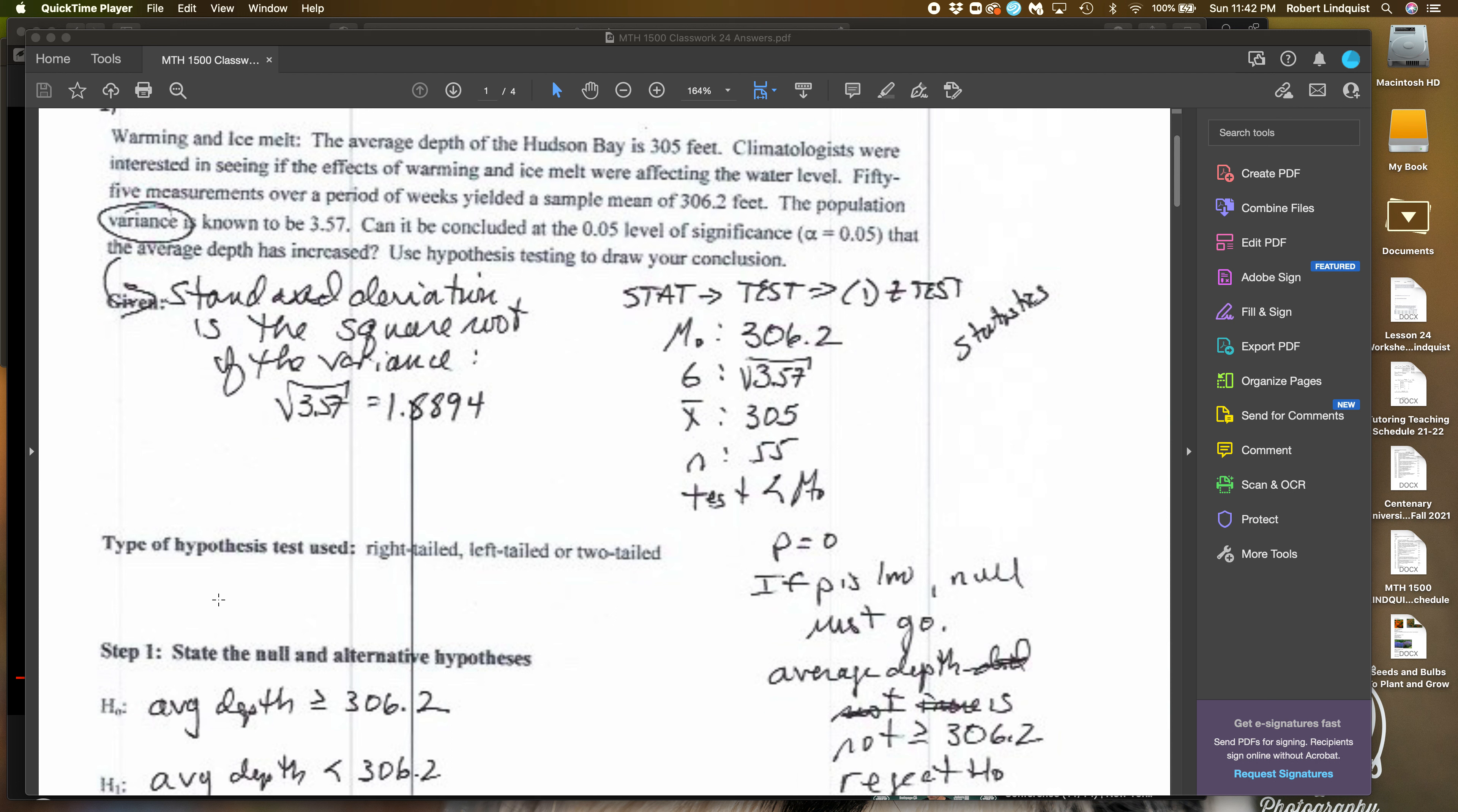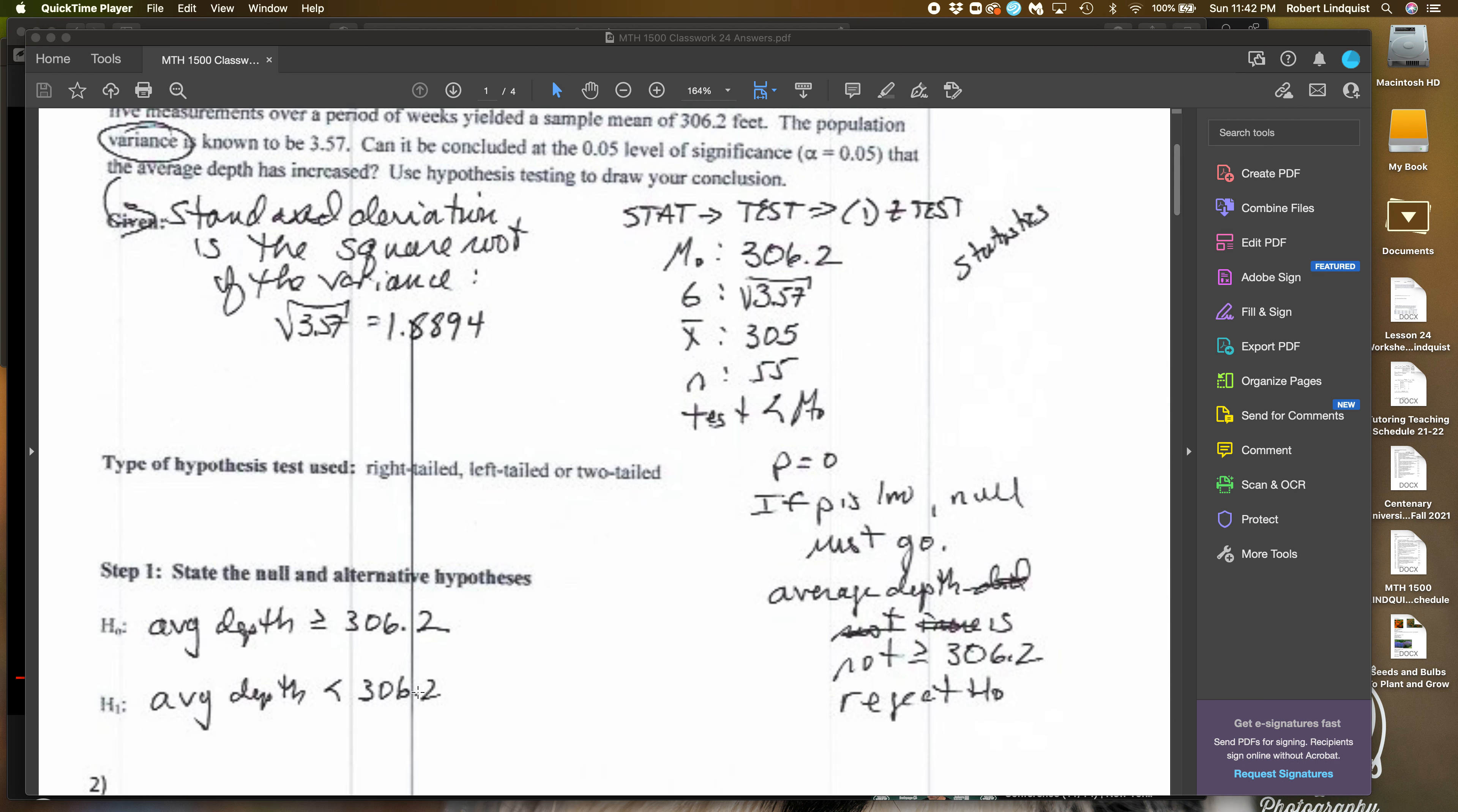So my null is that the average depth is greater than or equal to 306.2 feet deep. And if that's the null, then the alternative is that it's actually less than 306.2. And then it's just a question of what we input into the calculator and understanding how to do this.